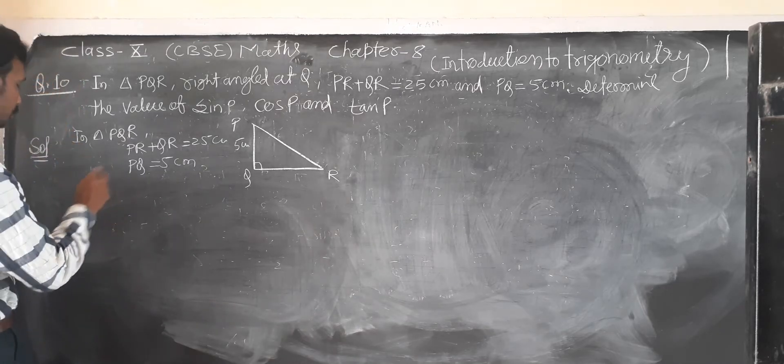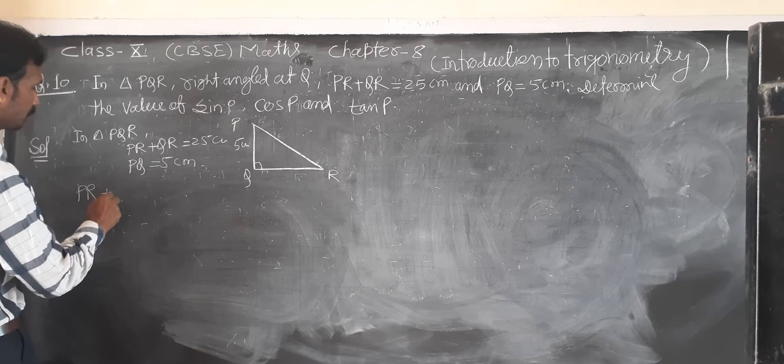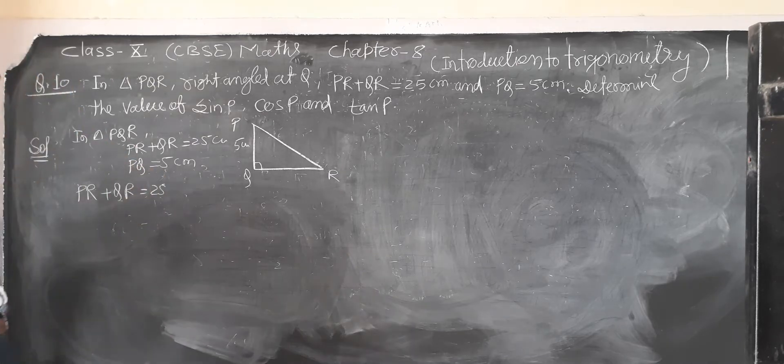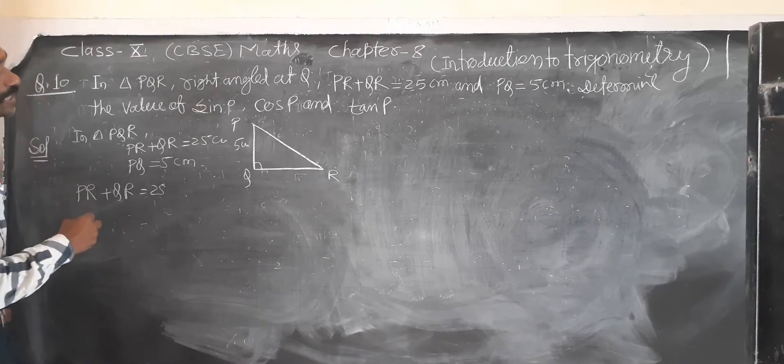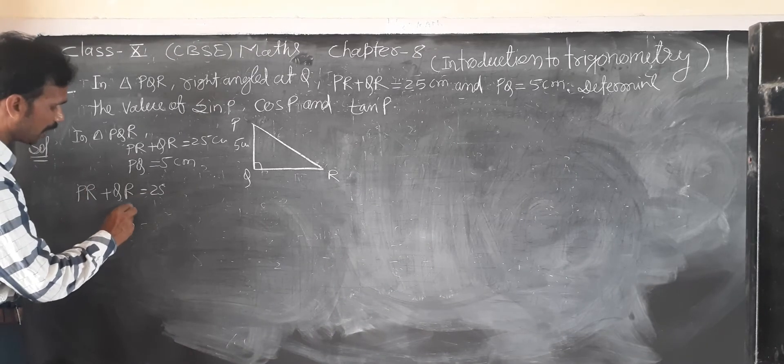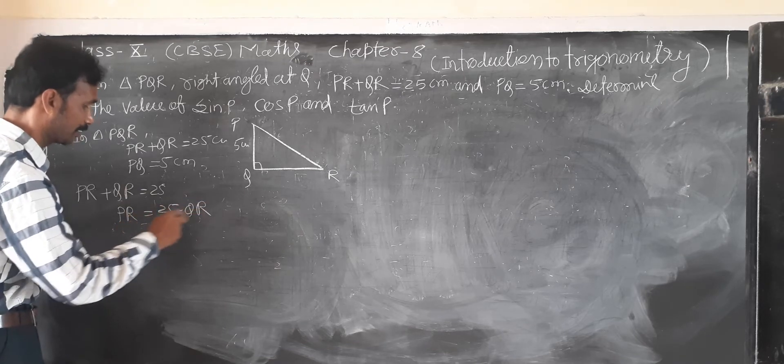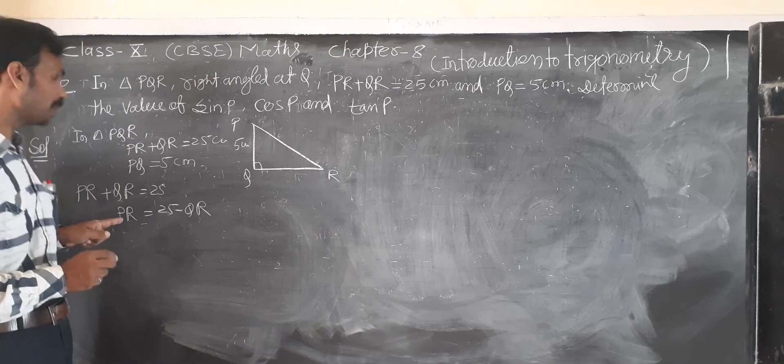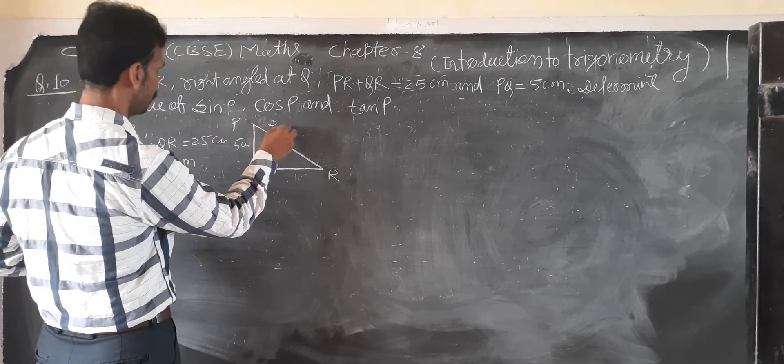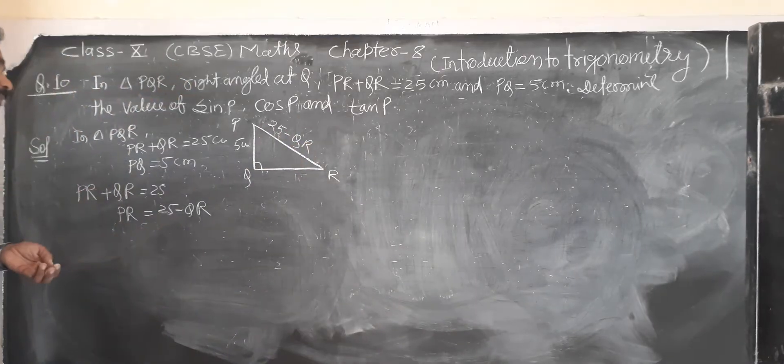So then, the solution. Question given: PR plus QR equal to 25 cm. Then PR, so now PR equal to 25 minus QR. This is right, so PR equal to 25 minus QR.